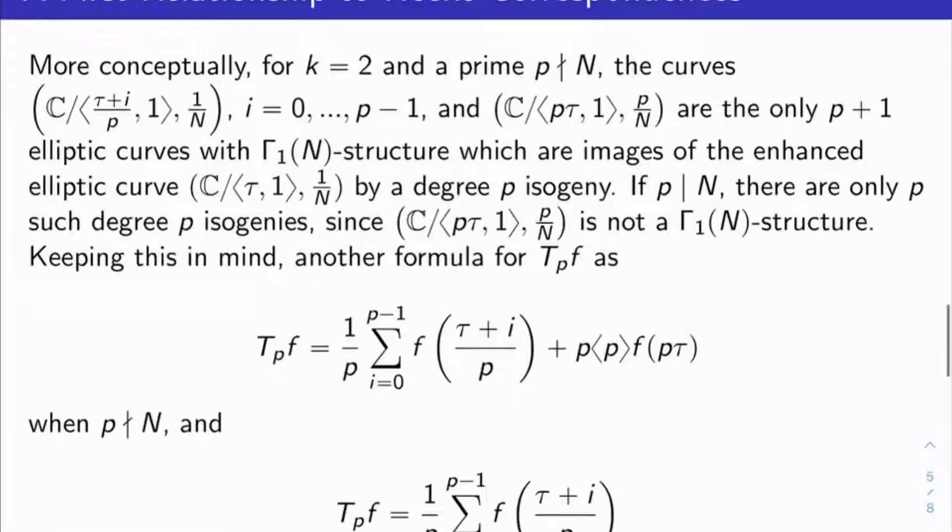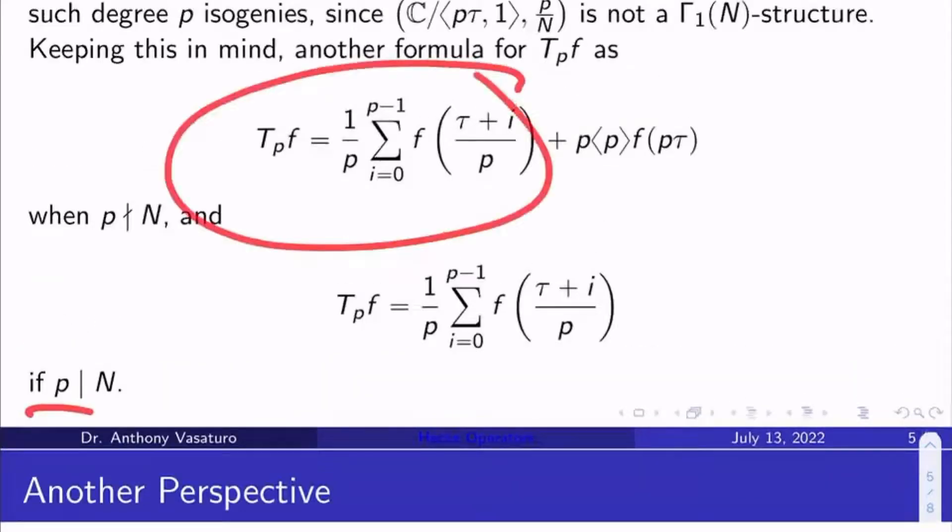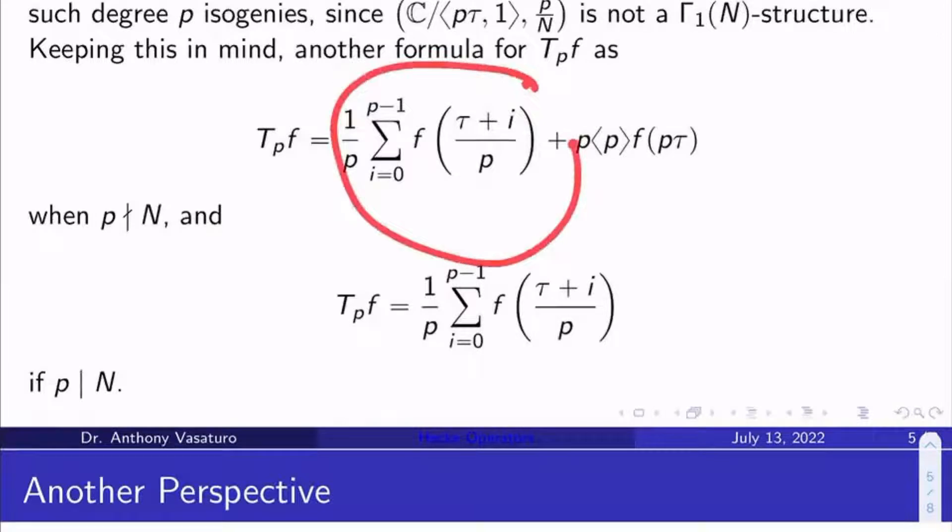So keeping this in mind, and by the way, this was all discussed when we were talking about the moduli theoretic and the orbit theoretic interpretation of the Hecke correspondences. And so keeping this all in mind, another formula for T sub p f is as follows. You take the sum from i equals 0 to p minus 1 of f evaluated at tau plus i over p. You average that, so you don't just take the sum, but you take the average. That's why we divide by p, because there are p guys in the sum here. And then you add on p diamond p f of p tau if p doesn't divide n, because you've got this extra image under degree p isogeny in that case. If p does divide n, you just take this first part to be your formula.